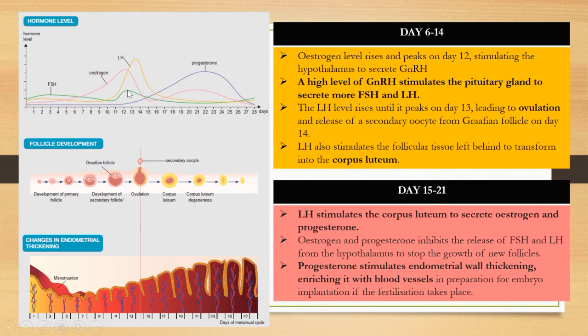During Day 6 to Day 14, the endometrium wall continues to repair and thicken due to rising estrogen. In the follicle development graph, the secondary follicle develops into the Graafian follicle, which then releases the secondary oocyte — this event is called ovulation.